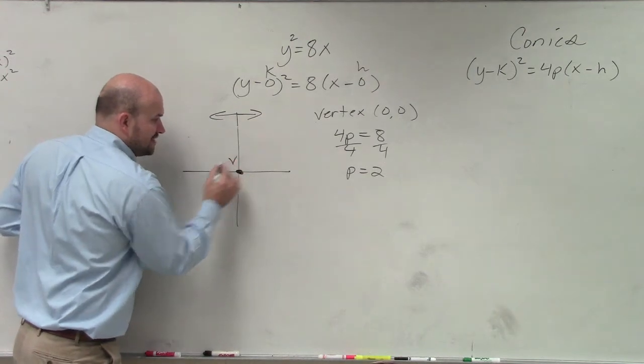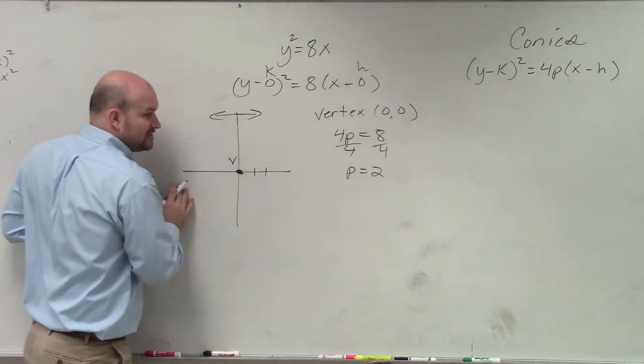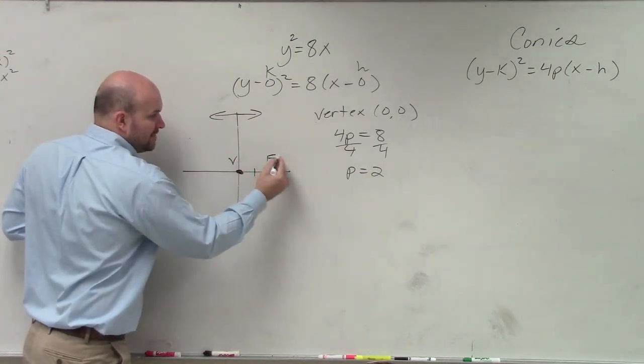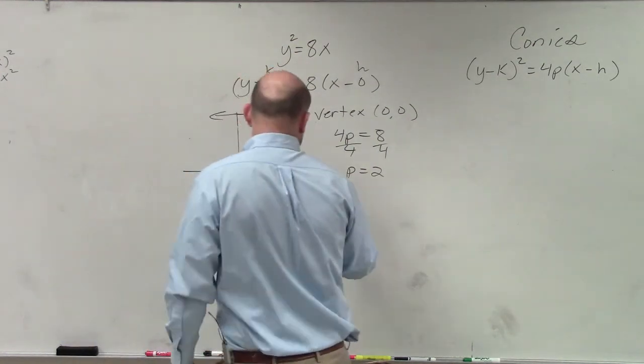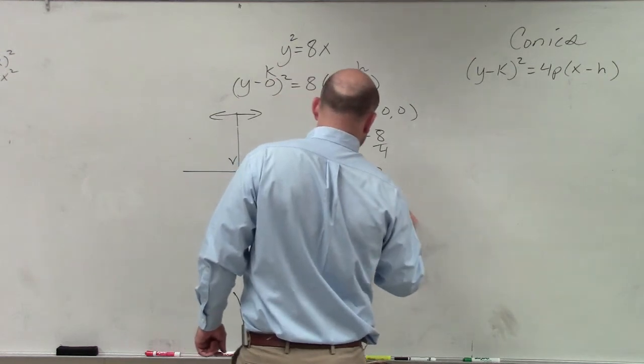So here's my vertex at 0, 0. Two units to the right is my focus. And then so now I can write in my focus is at 2, 0.